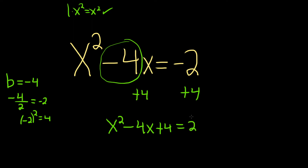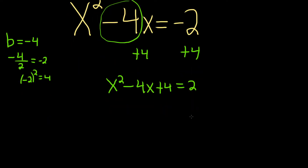The reason it's called completing the square is because this is going to be what's called a perfect square. It's called a perfect square trinomial because it has three terms, and this expression can now be written as something squared. That's why it's called completing the square.